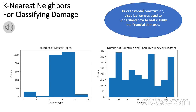The next algorithm we tried was k-nearest neighbors for classifying adjusted damage. Before processing and using this model, we did some basic visualization to understand the features. For example, looking at disaster type, the counts are mainly held in disaster types 2 and 3. We also looked at the frequency of countries that experience disasters, which was a very different picture — more spread out and less dense in certain areas compared to disaster type.